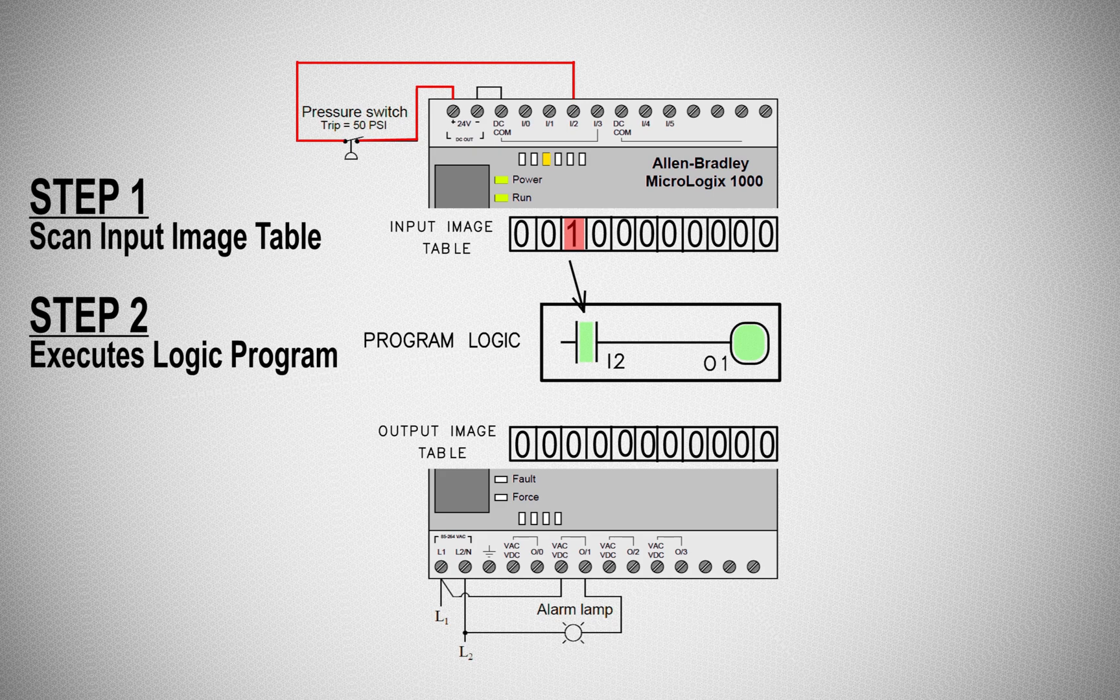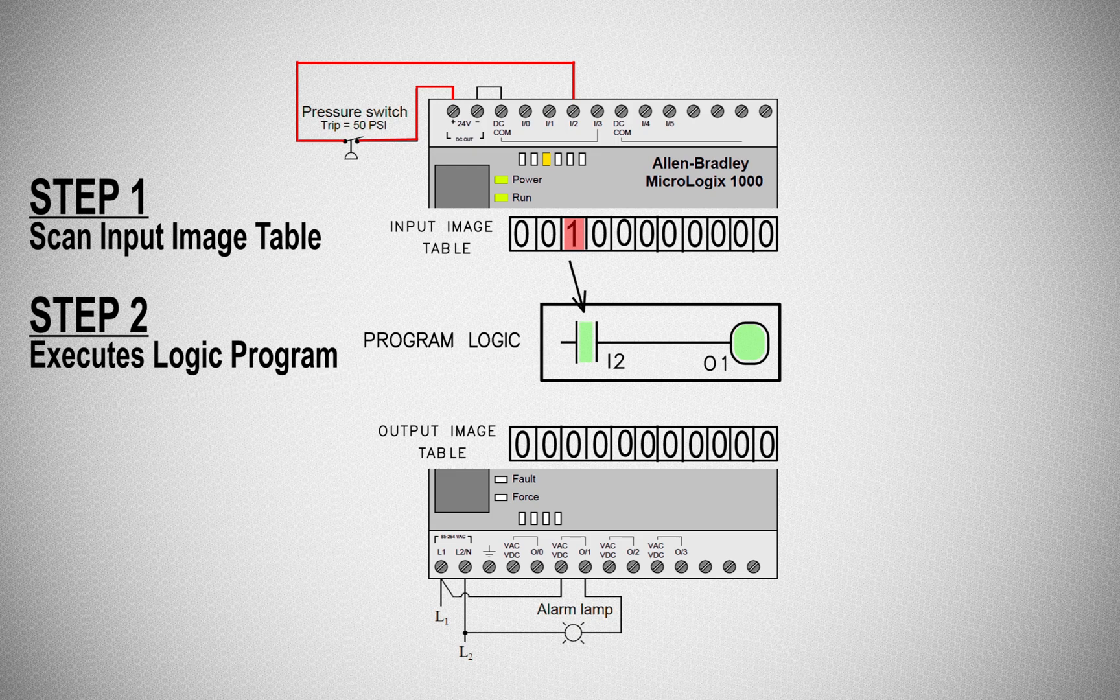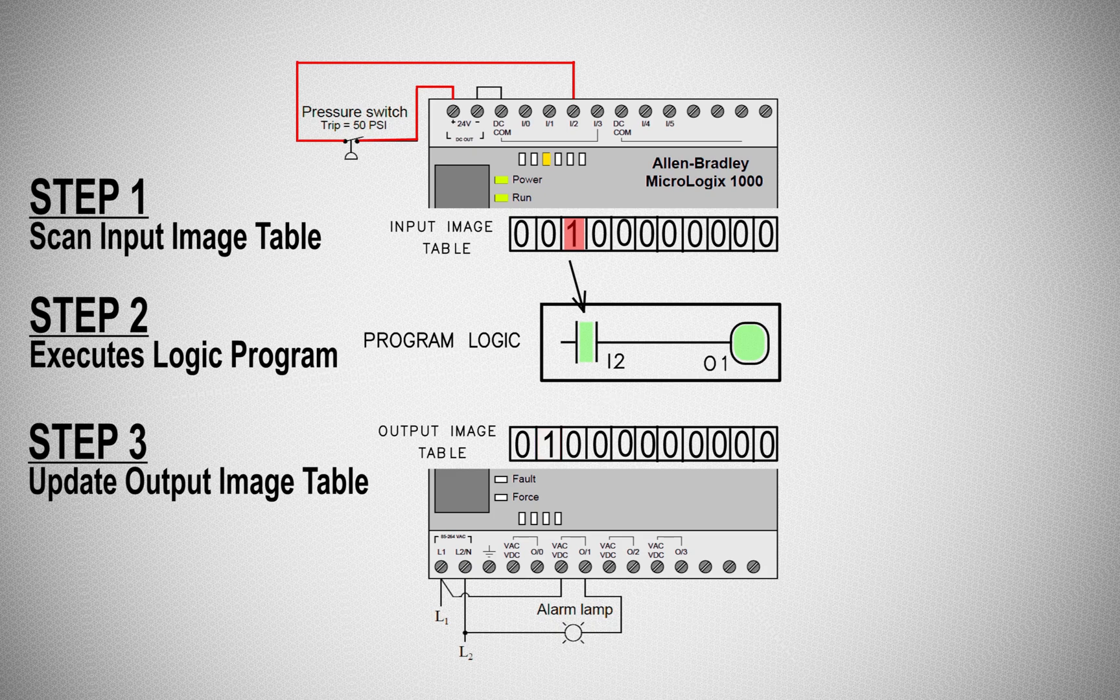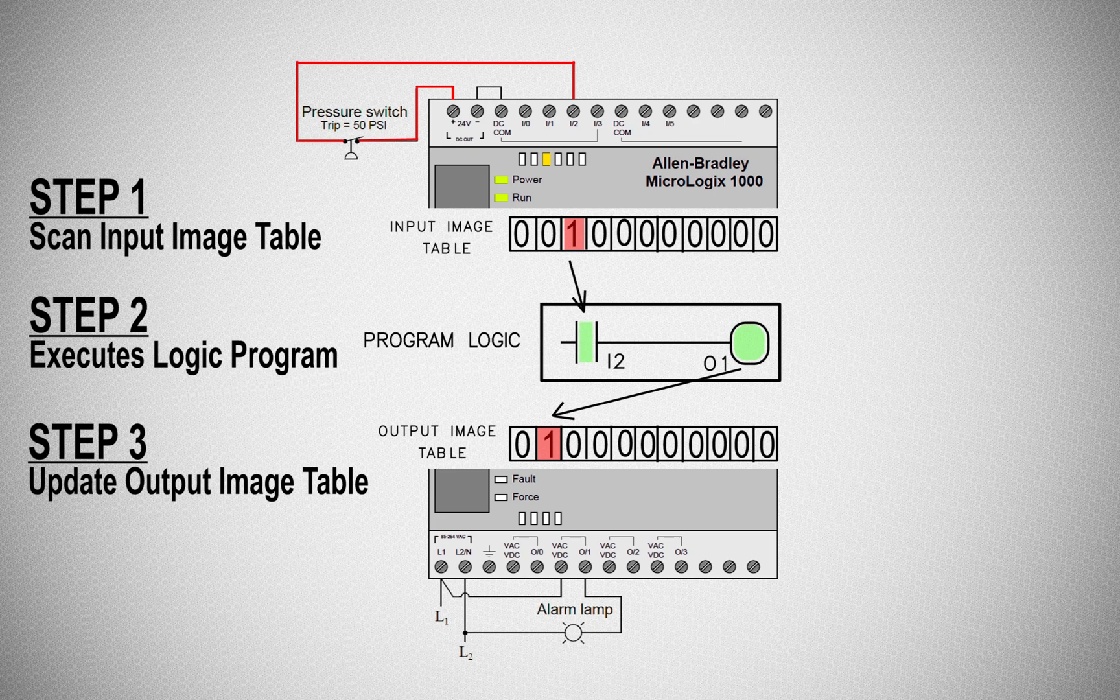Once the PLC has this information about the outputs, it will go to step number three. Here the PLC will update the output image table. To turn on an output it will put one, and to turn off the output it will put zero in the image table. Outputs get turned on or off according to the result the PLC determined in step number two.